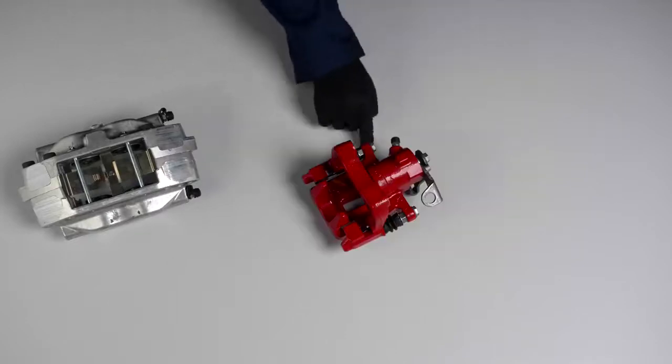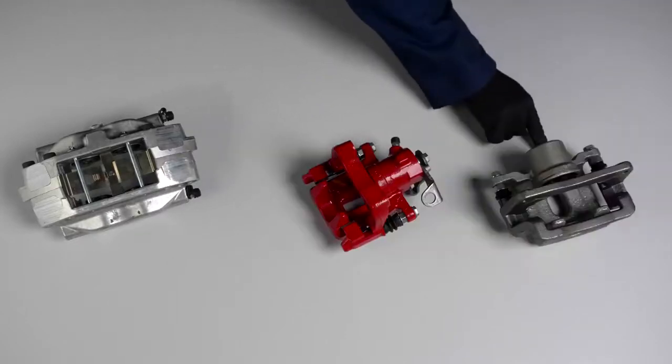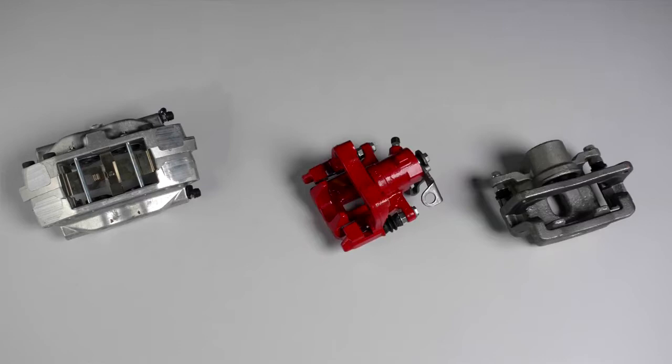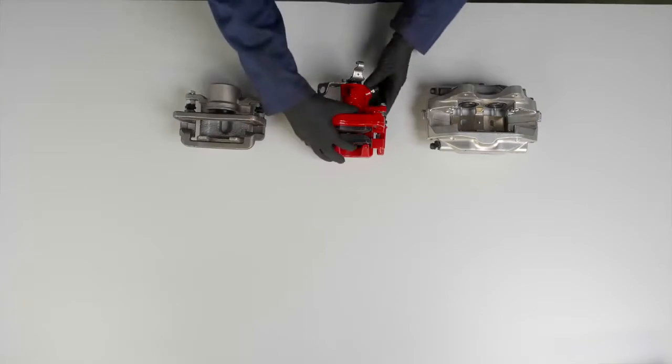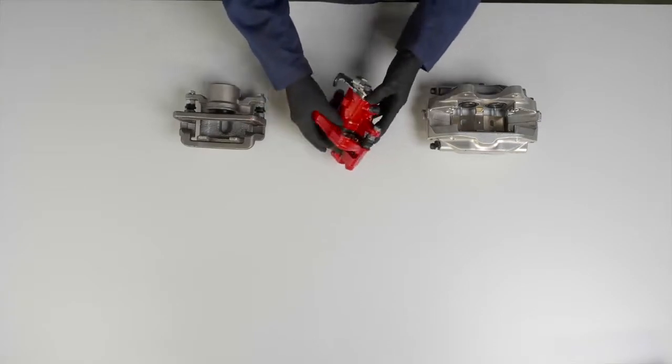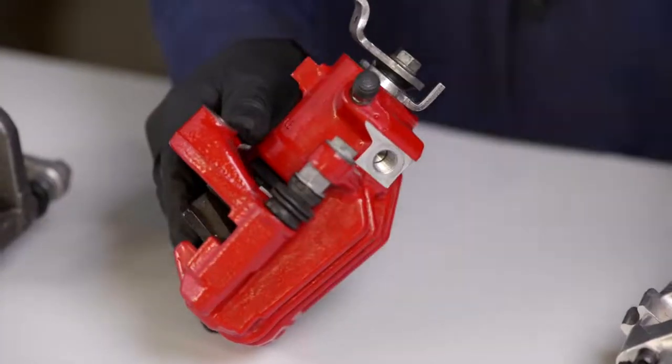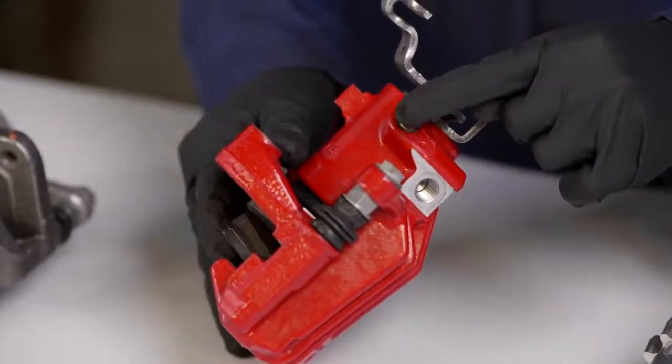Within the braking system, the calipers are the ones at the end of the circuit whose function is to slow down and stop the vehicle. How is it possible? Very simple. When you step on the brake pedal, the brake pump distributes the liquid through the circuit to each of the vehicle's brake calipers.